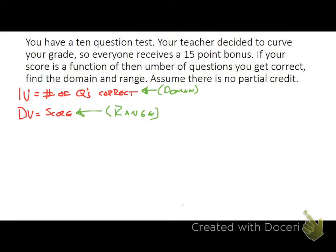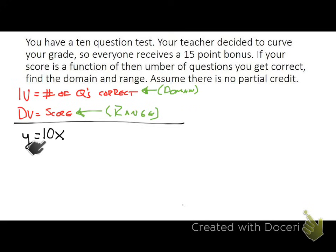Now let's write ourselves a function. Our score is going to be equal to: if there are 10 questions, every question is worth 10 points. So if you got one question right you'd have a 10, two questions right would be a 20, and so on. We also have to wrap in that 15-point bonus. So our function is 10x + 15 — 10 times the number of questions you get correct, plus 15 for the bonus.